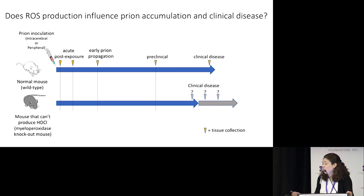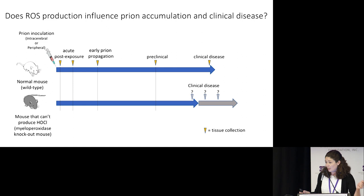This is all compared to a normal mouse that's also been injected with the same prions. Ultimately, we would expect that if these natural disinfectants do manage a prion infection, then an animal that's not able to produce them is going to have a different time between the infection event and the onset of clinical disease.